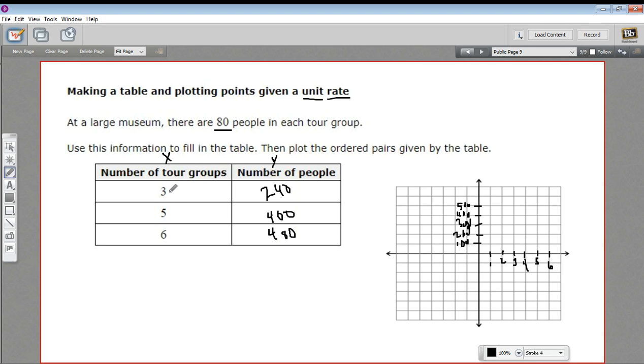All right. So let's plot our first point. We have three for the x and 240 for the y. So I go to the three, and then I go up to 100, 200, and almost halfway. So right about there. So that's the point three, 240.